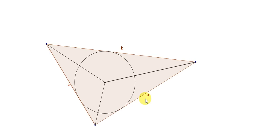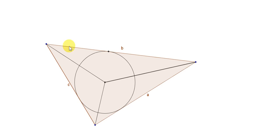Suppose the three sides of this triangle are A, B, and C. Looking at the top triangle, its base is B. The perpendicular height is the distance from the center of the circle to that side — specifically, the line joining the center to the point of contact of the tangent. We know that such a line is always perpendicular to the tangent; that's the property of a tangent.